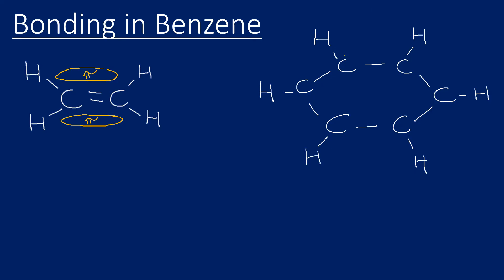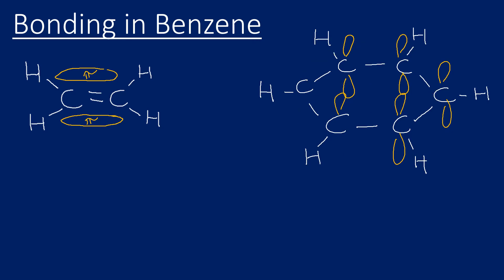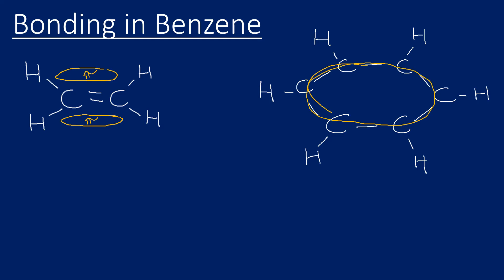Something similar happens in benzene. All of the p orbitals have one electron each — that's six electrons in total for the six carbons. All six p orbitals overlap, and we end up with a ring of delocalized electrons above and below the structure. So it's like a massive pi bond, with six electrons delocalized throughout the ring structure.